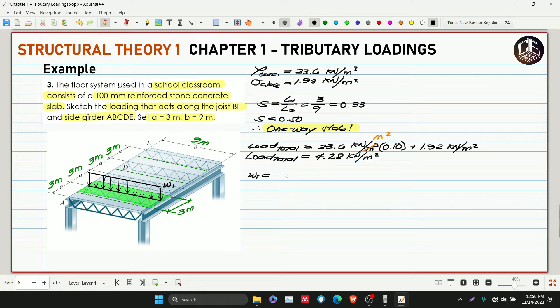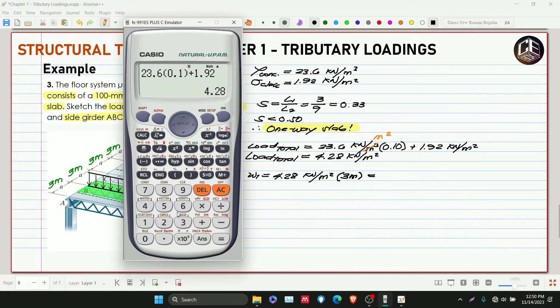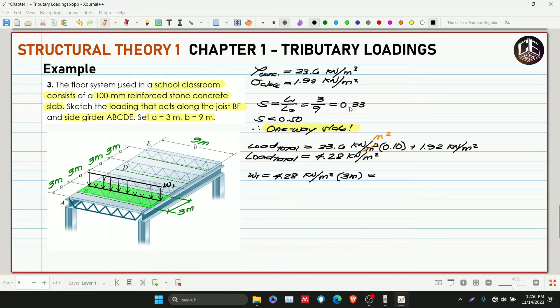So this is 4.28. Now our W1 is equivalent to 4.28 kilonewton per meter squared distributed over the whole area. We'll distribute it along 9 meters, so multiply 4.28 by 3 meters.